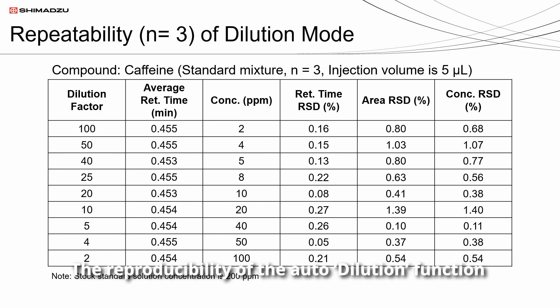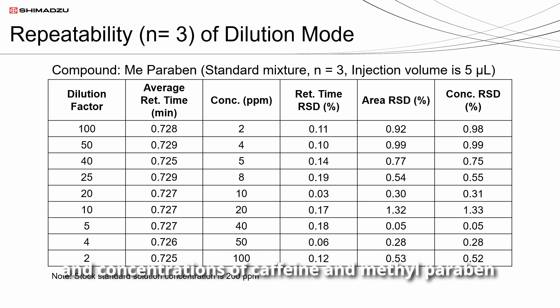The reproducibility of the auto dilution function was evaluated by triplicate pre-treatments. The percent RSD of retention times, peak areas, and concentrations of caffeine and methylparaben all achieved 1% and lower.